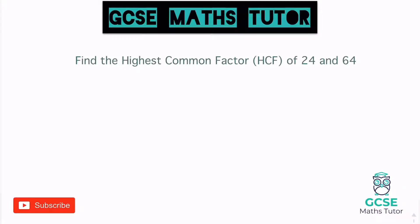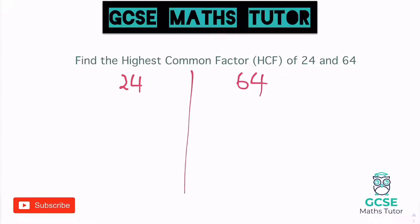So this says: find the highest common factor of 24 and 64. A factor is a number that fits into these two numbers perfectly. I'm going to try and find the one which is matched in both. So I'm going to start with finding the factors of both these numbers, starting with 24, and then I'll have a look at 64. I'm going to split this up into two halves.